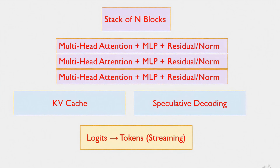GPT-5 is really just a stack of identical transformer blocks, and each block has two main parts: ATTN, or multi-head attention, which lets the model look back at different parts of the context like multiple radar screens; and an MLP, a multi-layer perceptron, that transforms those signals into richer patterns. These are tied together with ResNorm — residual connections plus layer normalisation — which keep the system stable, like guardrails on the flight path. To keep responses fast, the model uses a KV cache, which remembers what's already been processed so it doesn't have to re-read the whole input every time. And there's speculative decoding — a speed trick where a smaller co-pilot model drafts the next words and the big model just checks or fixes them, which is why tokens stream onto your screen so smoothly.